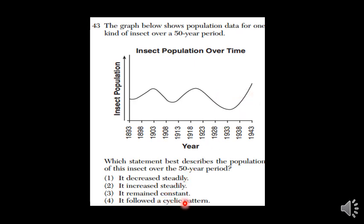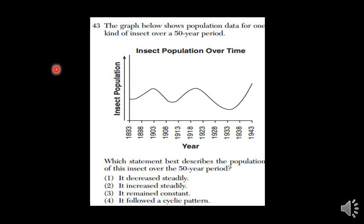It follows a cyclic pattern. Cyclic means repeating pattern — it's kind of like a cycle, like the water cycle. We have evaporation, condensation, precipitation, runoff, then it starts over again: evaporation, condensation, precipitation, runoff. It's a cycle. It repeats over and over again.